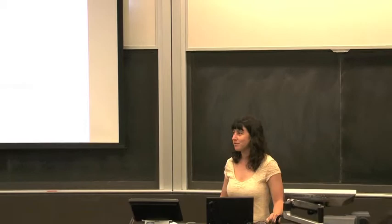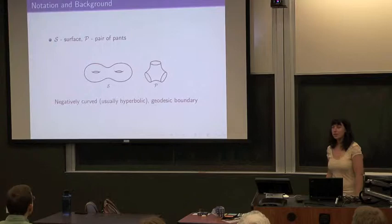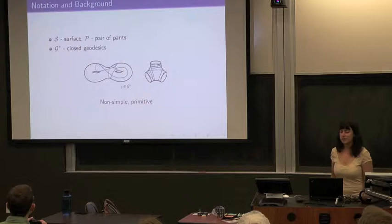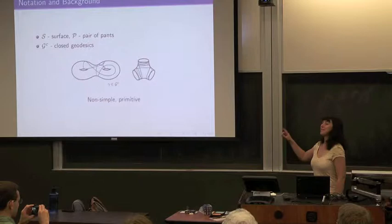First, some definitions. S will always be a subsurface, usually hyperbolic, with geodesic boundary. In particular, I'll be talking about pairs of pants, always around my P. And then C is the set of closed geodesics. They're non-simple — they do have self-intersection — but they will be primitive, meaning they don't wrap around themselves multiple times.